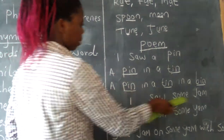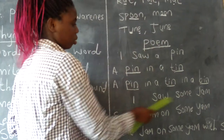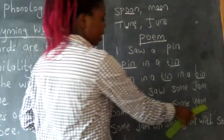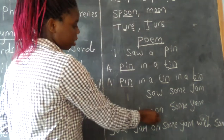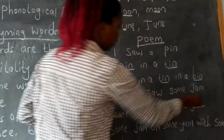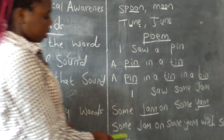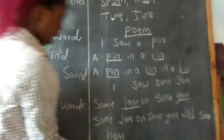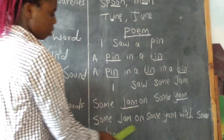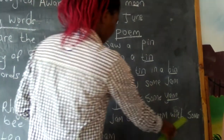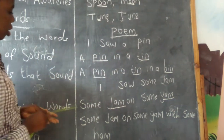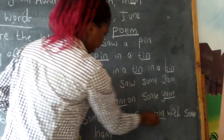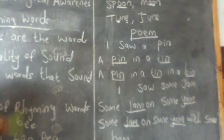I saw some jam. Some jam on some yam. So 'jam' and 'yam' are rhyming. Some jam on some yam with some ham. So we have 'jam', 'yam', and 'ham' — rhyming.